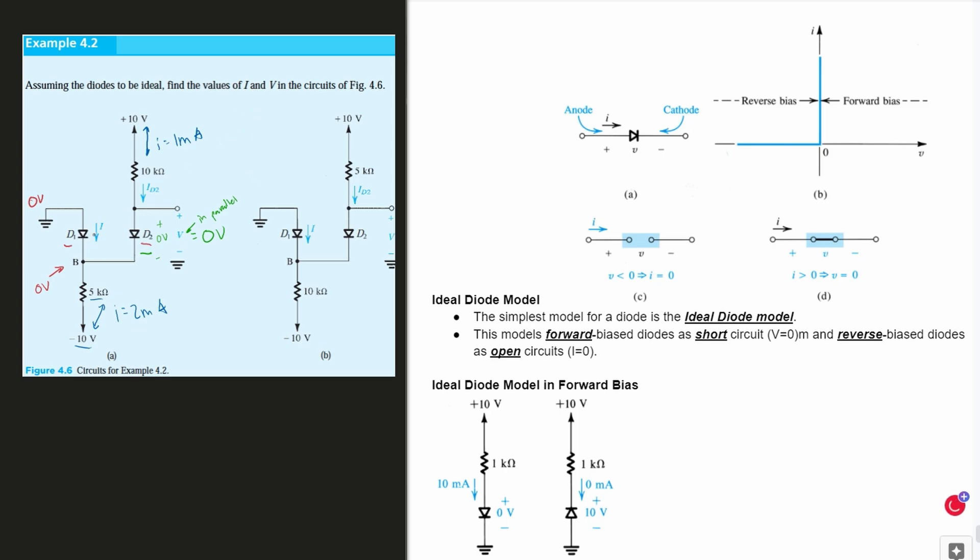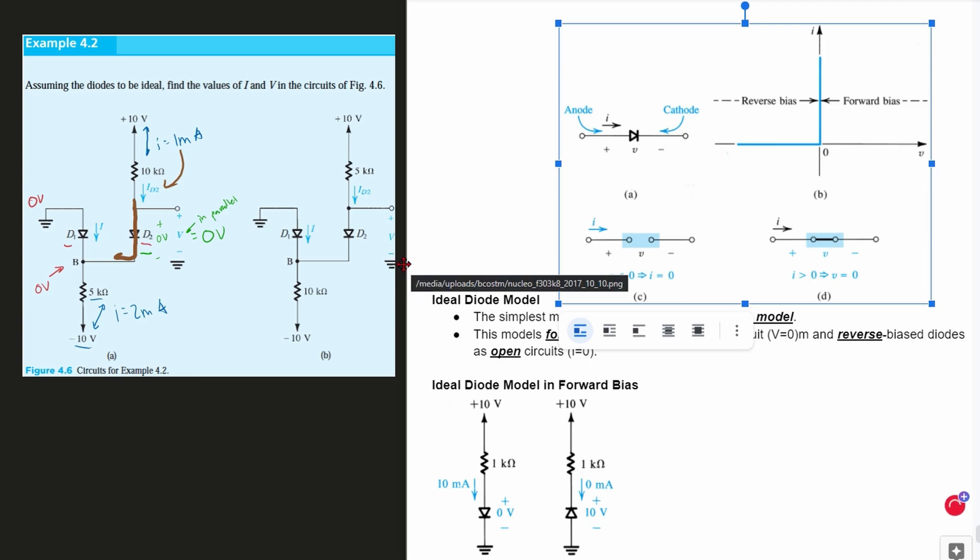Now, let's look for our I. Our I is right here. We found the ID2 right here. This is 1 milliamp. And we know that this 1 milliamp is going to flow through here. And we're going to have the current, since it's greater than zero, it's going to be like figure D, where our current flows through the voltage, the diode. V is equal to zero, which is what we have at D2. So the current is greater than zero.